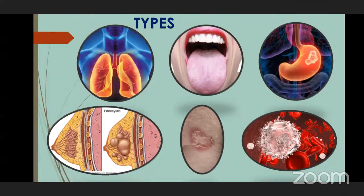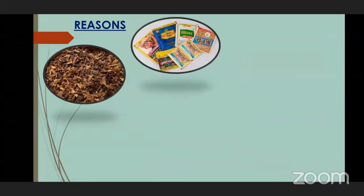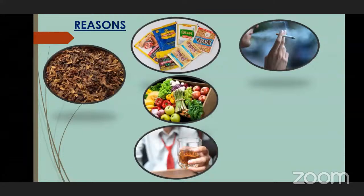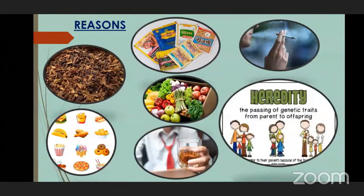Why does cancer happen? The reasons are: consumption of tobacco — you must not use tobacco as it may lead to cancer. You should not eat gutka or smoke, and should not use alcohol. Lack of fiber content — that is, lack of fruits and vegetables — if you don't have a proper diet, it may affect your body. Consumption of junk food like pizza and burgers must be avoided. Heredity — from parent to child — is also a reason. You must avoid all these things.